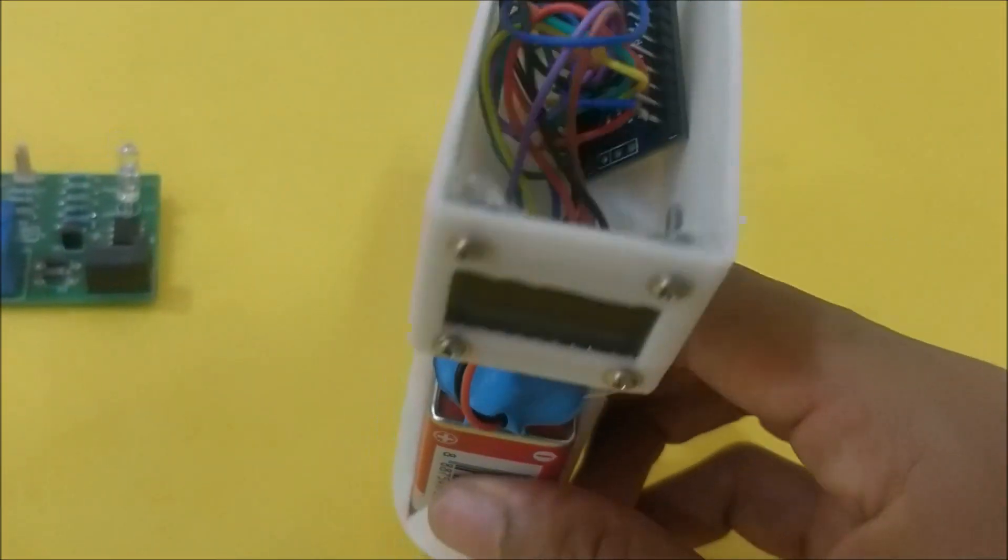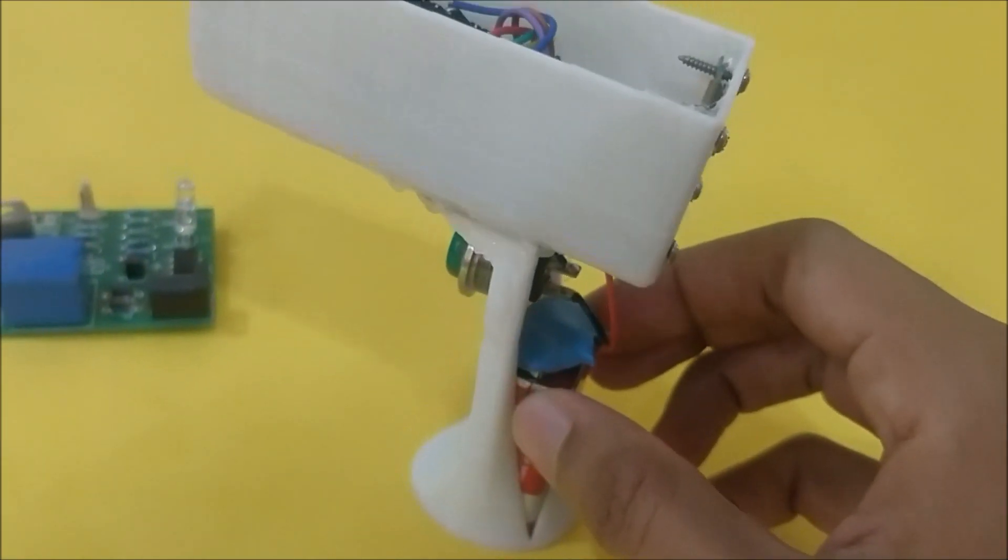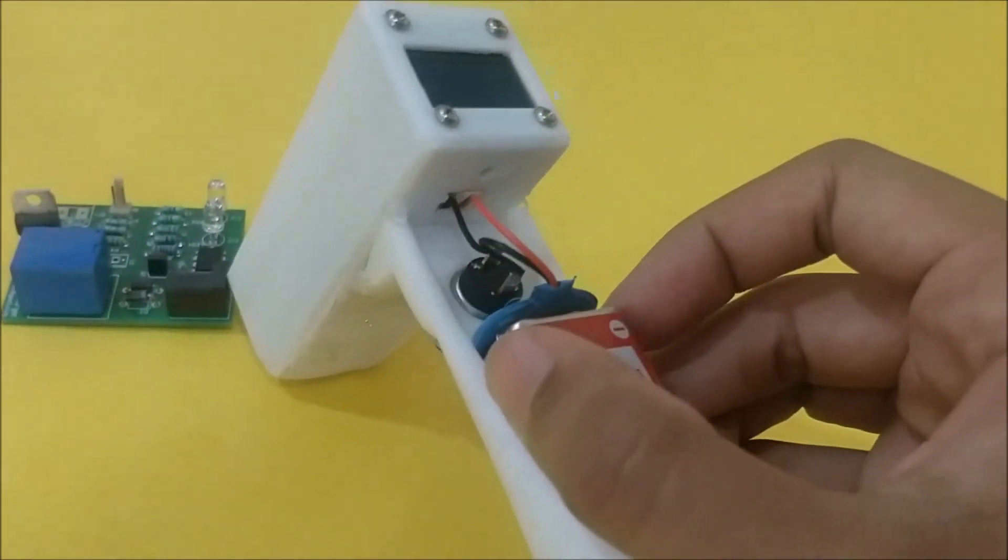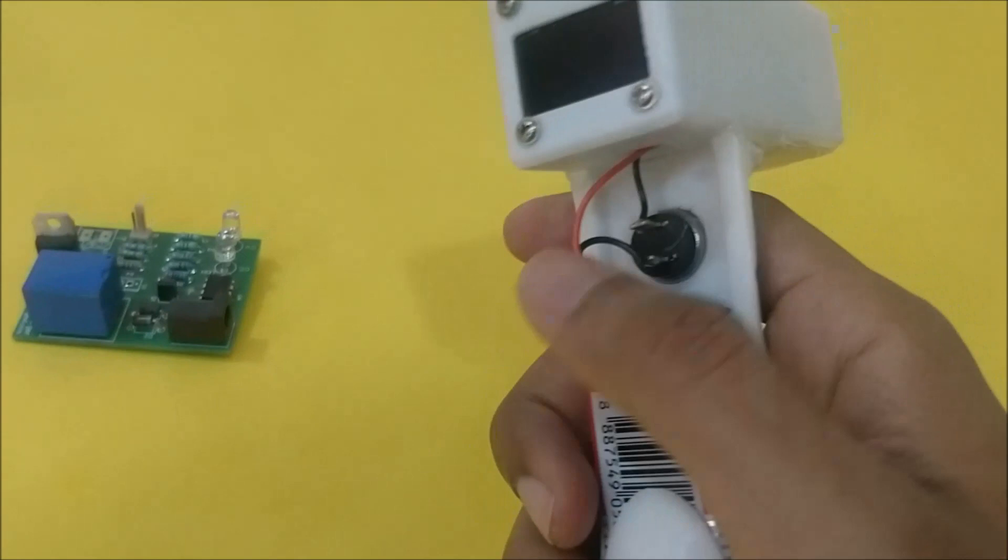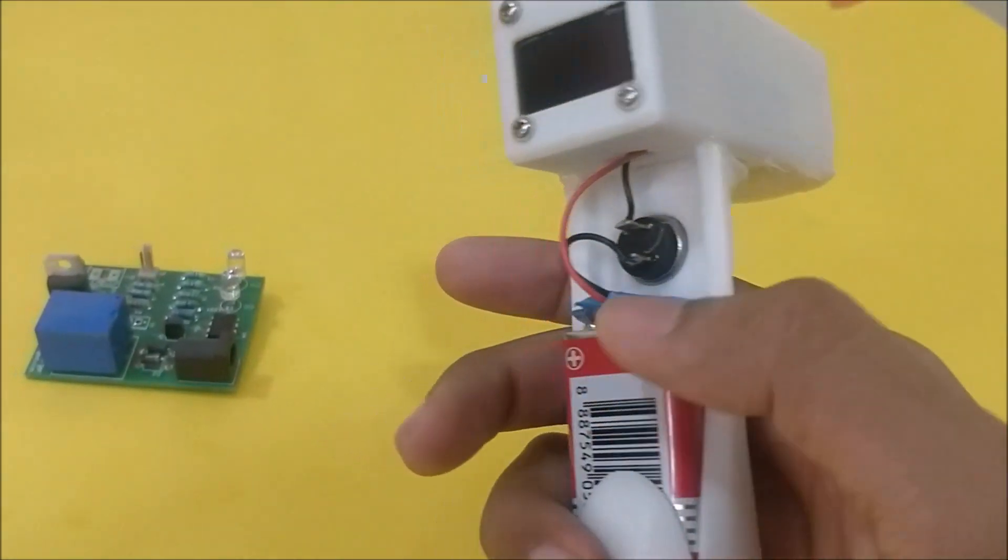The power to this Arduino board is provided by this 9-volt battery. The raw pin and the ground pin come out through this hole over here and go through this push button, then it is powered by this 9-volt battery which fits inside the handle of the gun.